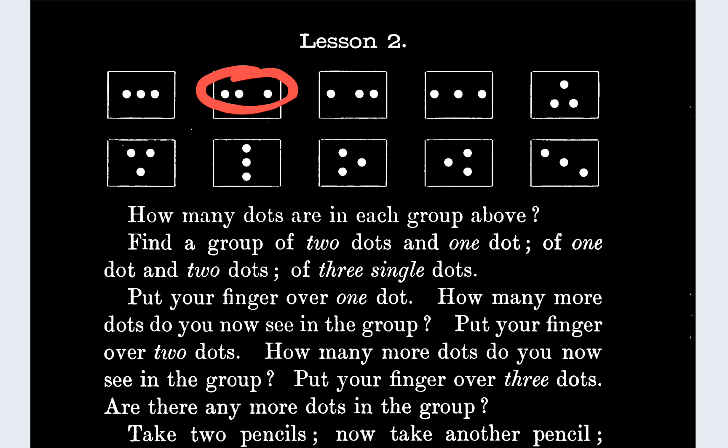And then it says find a group of one dot and two dots. One dot and two is here. And then find three single dots. These are three single dots. Well, these are three single dots too.